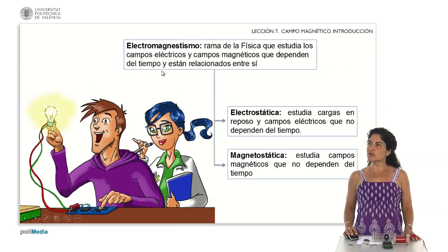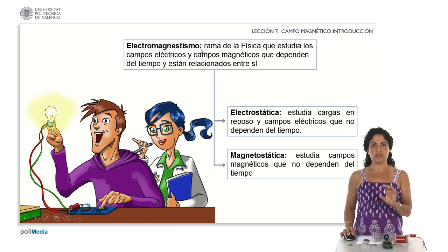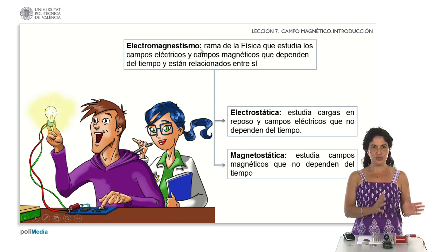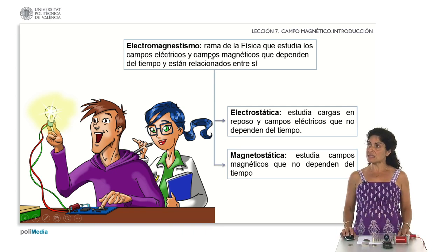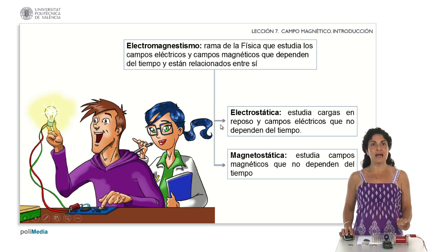During the first section, we were already analyzing that electromagnetism is encompassed by two parts: the study of the electric field and the study of the magnetic field. In section 1, we analyzed electrostatics, which studied charges at rest and electric fields that did not depend on time. Now we are going to focus on magnetostatics — the study of magnetic fields that do not depend on time.